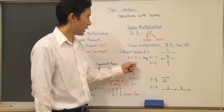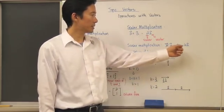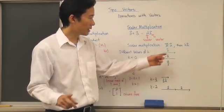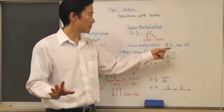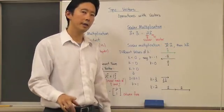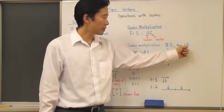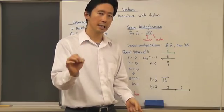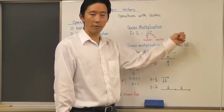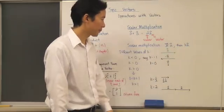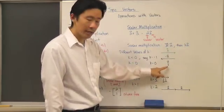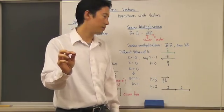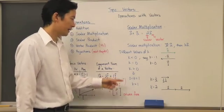If k equals zero, we come out with the zero vector. Be careful — the result of scalar multiplication is always a vector. Zero times vector a does not give you the scalar zero; it gives you the zero vector, which has no magnitude and its direction can be anything.